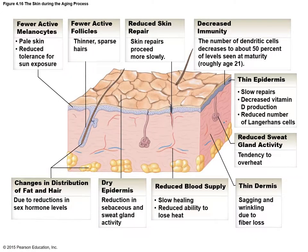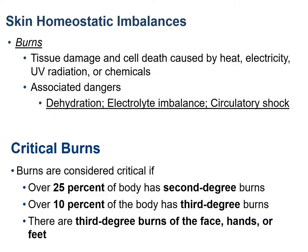This figure summarizes all the effects of aging on the integumentary system. Moving on to homeostatic imbalances — that means problems in the skin. Burns are a major source of homeostatic imbalance, caused by heat, electricity, ultraviolet radiation, or even chemicals, and they lead to cell and tissue damage.